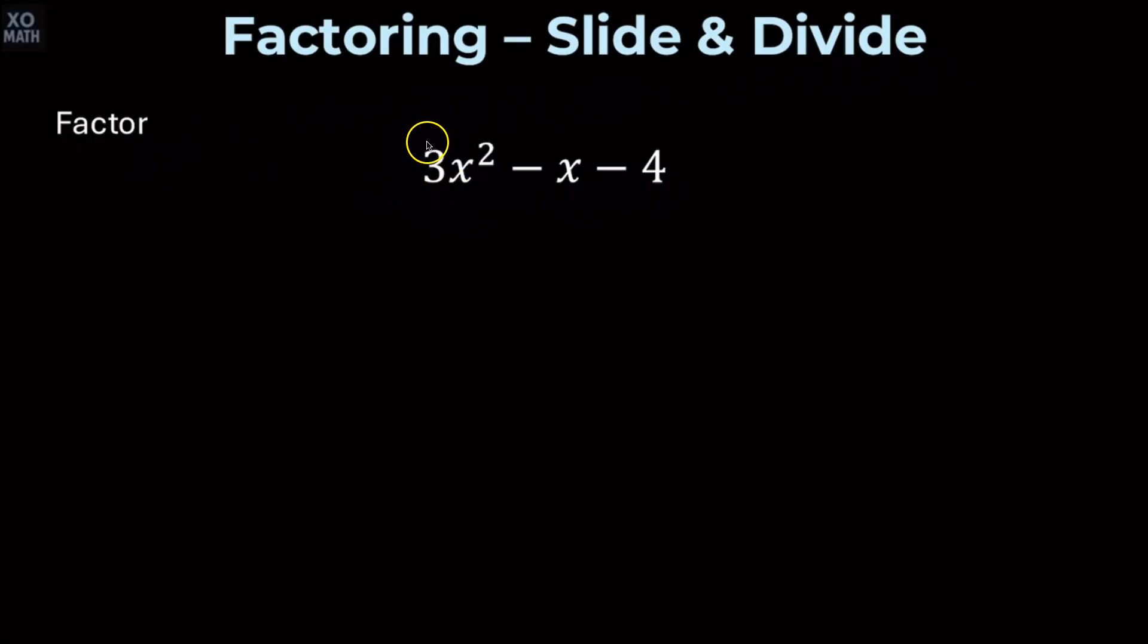This technique is going to allow us to take that leading coefficient and slide it over through multiplication to the constant in the back. So we're going to create a new quadratic that starts with just x squared, then we have the middle term minus x, and then our constant is now minus 12.